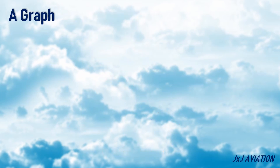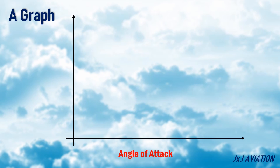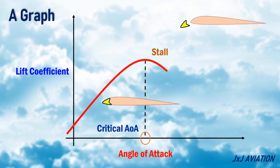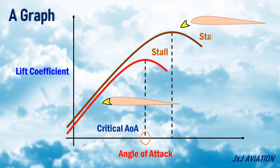Let's plot a graph between the angle of attack and the lift coefficient. When the slats are retracted, the lift increases with an increase in the angle of attack, till it reaches the critical angle of attack. Beyond this angle, the wing stalls. If the slats are extended, the lift again increases with the angle of attack, but the wing will stall at a greater angle of attack. This means the critical angle of attack has increased.